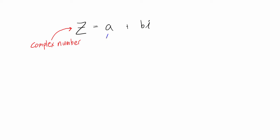a and b are real numbers, but a specifically is called the real part of the complex number, and b is called the imaginary part, and i is called the imaginary unit.